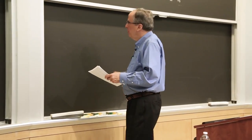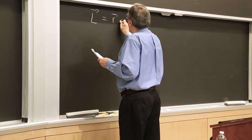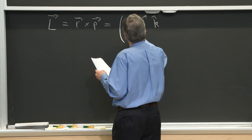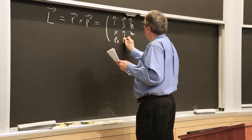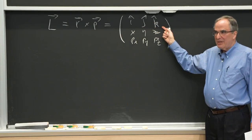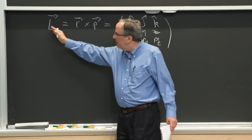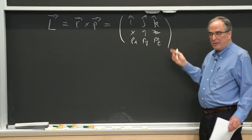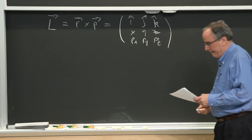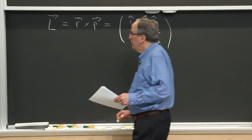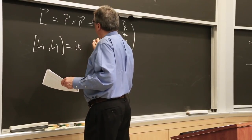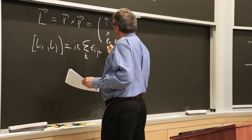We can define angular momentum as r cross p, which we write as a determinant with unit vectors along x, y, and z directions — giving three components. Here is the magic equation: [Lᵢ, Lⱼ] = iℏ Σₖ εᵢⱼₖ Lₖ. The Levi-Civita symbol εᵢⱼₖ is a really neat tool that enables you to derive new equations efficiently.